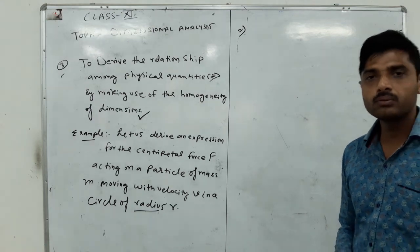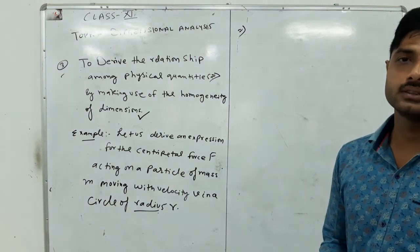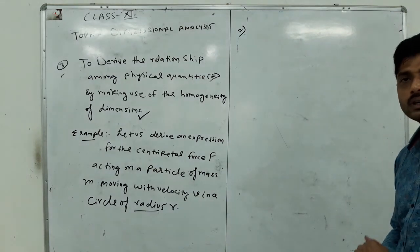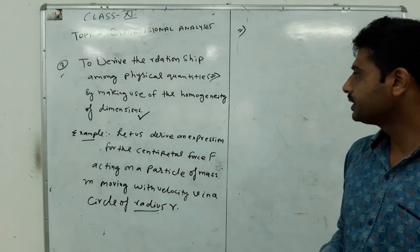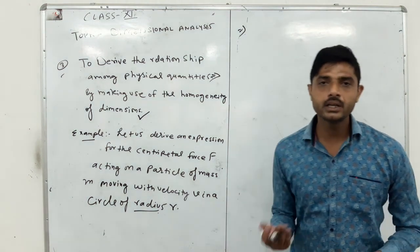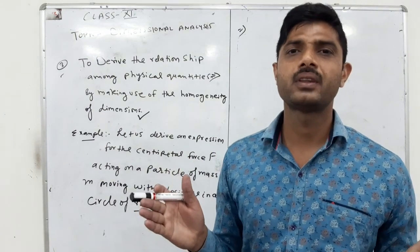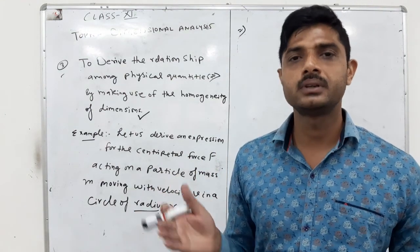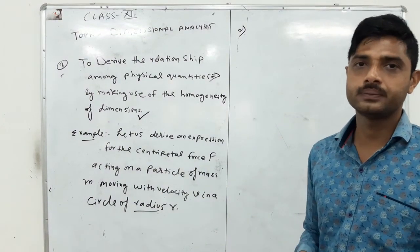By using dimension formula we can derive relations among physical quantities by making use of the homogeneity of dimensions. Homogeneity of dimension means in an equation the dimension of both sides will be same. This is known as consistency of equation.